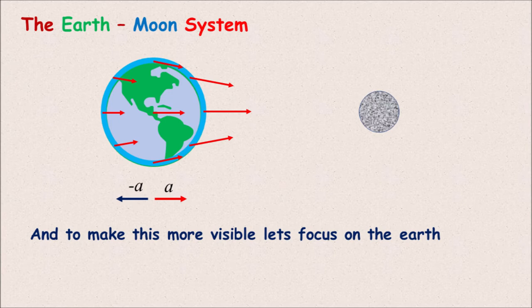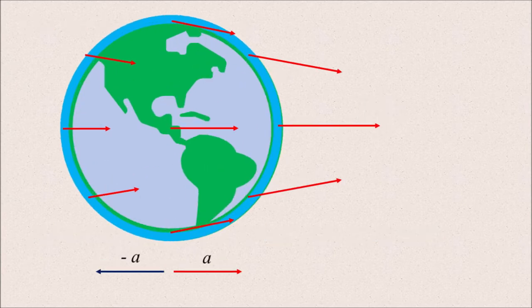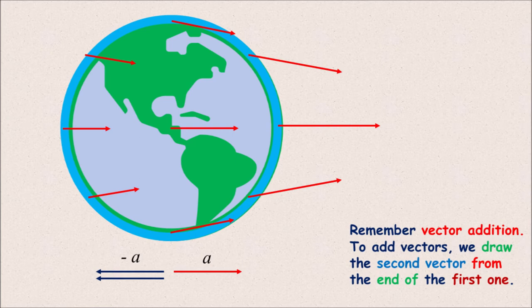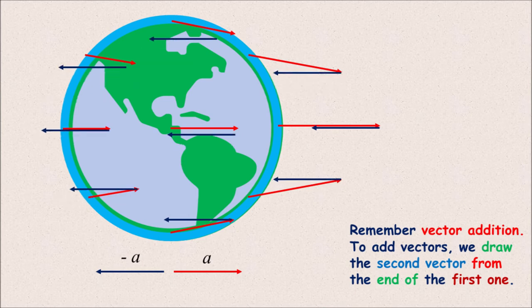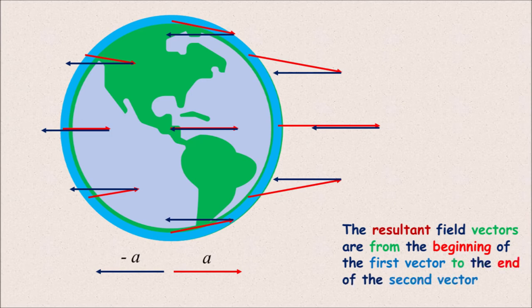And to make this more visible, let's focus on the earth. Remember vector addition. To add vectors, we draw the second vector from the end of the first one. The resultant field vectors are from the beginning of the first vector to the end of the second vector.